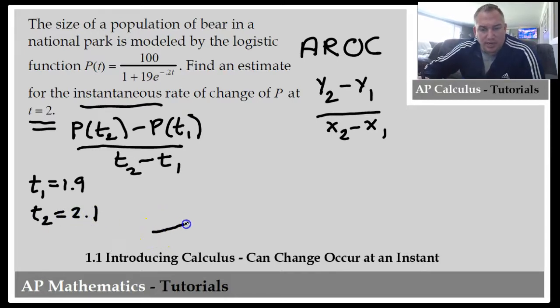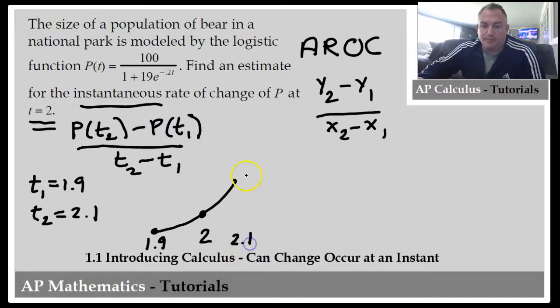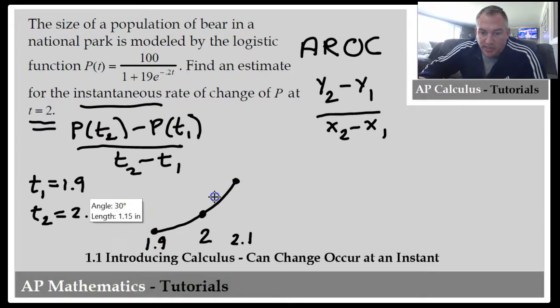So graphically, what we're doing here is we have this curve, and we're trying to find the instantaneous rate of change exactly at 2. And we're going to do so by looking at the average rate of change between 1.9 and 2.1. The average rate of change being just the slope between these two points.